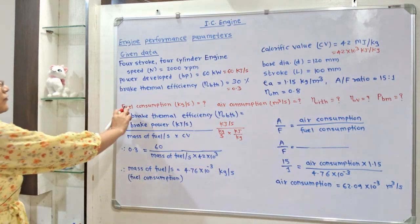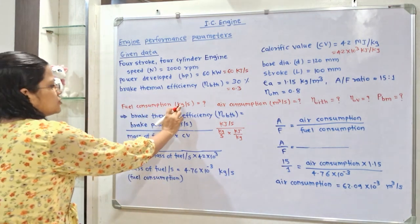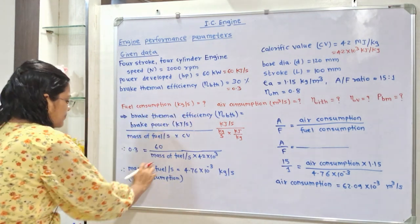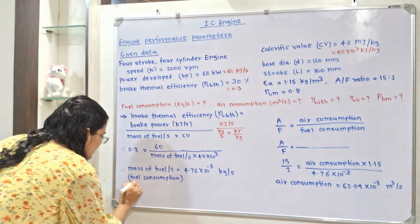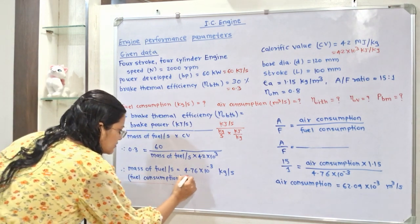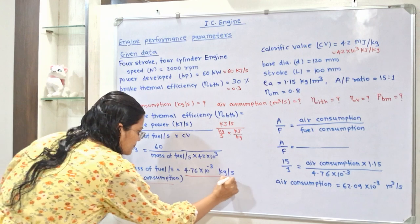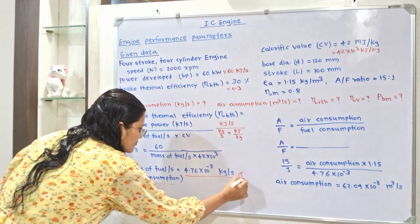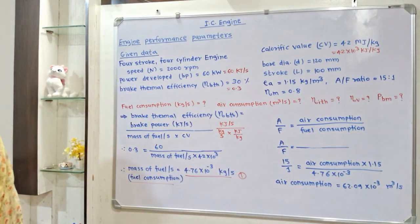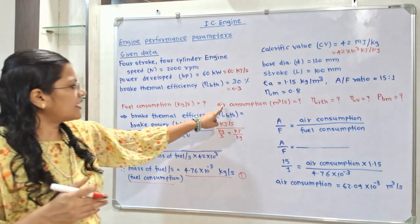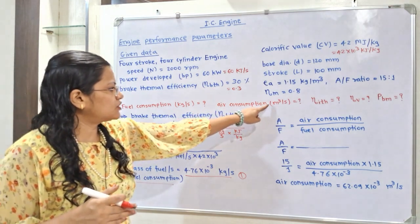So fuel consumption is 4.76 × 10⁻³ kg per second. This is the first answer. Now we move to the second calculation: air consumption.